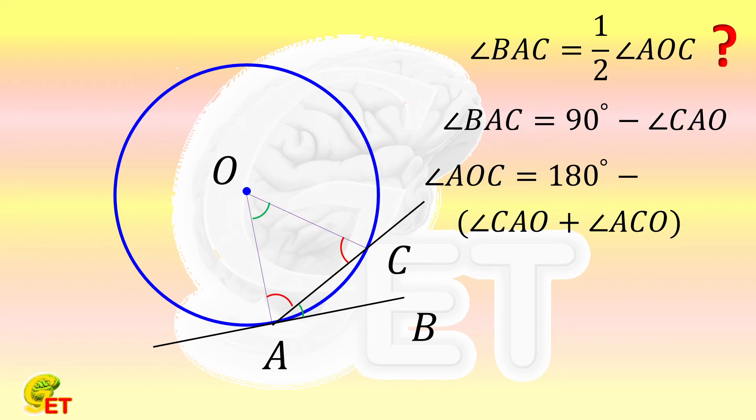Triangle OAC is an isosceles triangle. So angle CAO is equal to angle ACO. So the angle AOC is actually equal to 180 degrees minus twice of the angle CAO. The angle BAC is then equal to half the angle AOC.